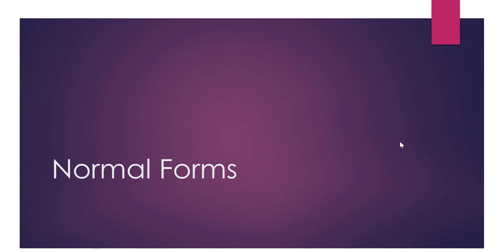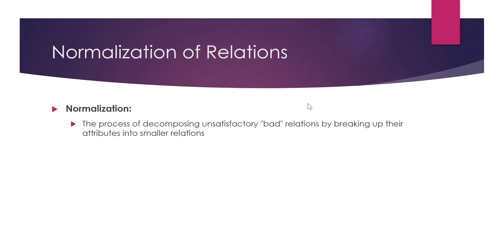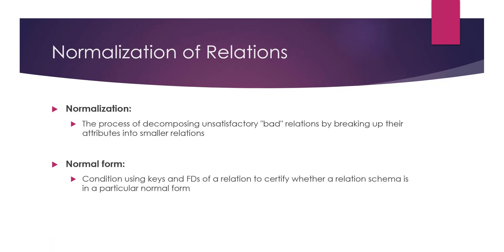In this video, we are moving forward with normalization, and we'll see how we can achieve the different normal forms based on the primary keys and the functional dependencies that we learned about before. In normalization, we are going to decompose our bad relations or tables where we have data redundancy or data anomalies like update, insert, or delete anomalies. We'll be breaking up their attributes and forming smaller relations to achieve the different normal forms. We will be using the keys and the functional dependencies to certify or check if a relation schema is in a particular normal form.